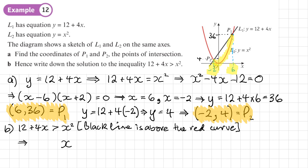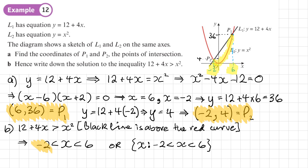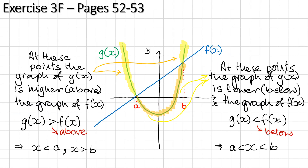So the solution is −2 < x < 6. In set notation, we can write this as the full double inequality. That is the final answer. You should now be able to do exercise 3F from pages 52 to 53 of the textbook.